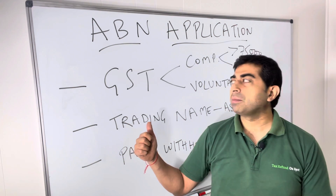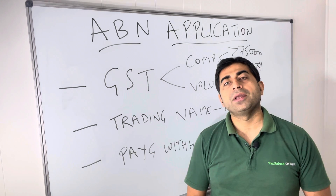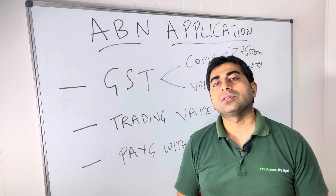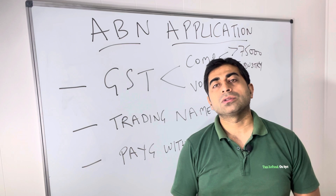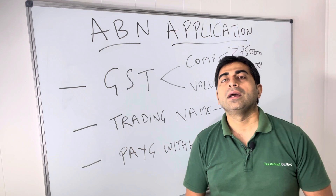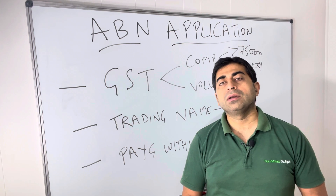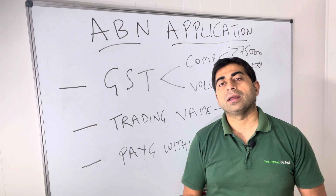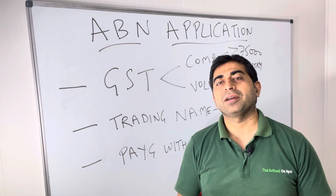So those are the three things when you apply for an ABN: GST, your trading name, and PAYG withholding. In case you have any questions, call us or register on our website taxrefundonspot.com.au and one of our accountants will give you a call same day. Thanks for watching, see you next time.